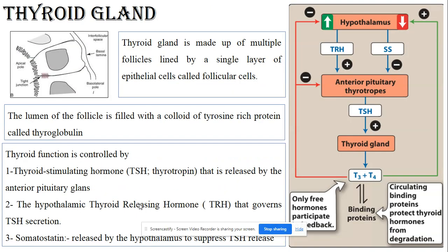As for the thyroid gland, it is made up of follicles, and these follicles are lined by a single layer of follicular cells. The follicle is filled with a tyrosine-rich protein called thyroglobulin. The thyroid gland regulates and produces T3, which is triiodothyronine, and T4, which is thyroxine.